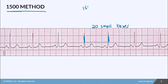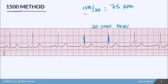Now take 1500 divided by 20 and you get 75 beats per minute. You might ask where 1500 comes from.